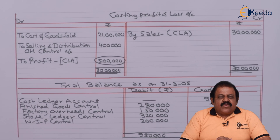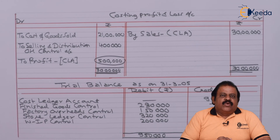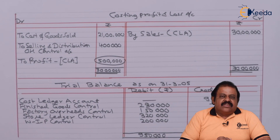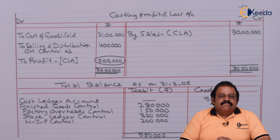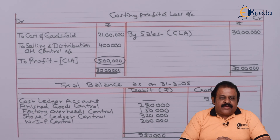In this question we have learned that if factory overheads are given in relation to direct wages, we are required to record the absorption of factory overheads and proceed accordingly. Thanks for watching this video. Stay in tune with Ikeda and subscribe to our channel. Thank you.